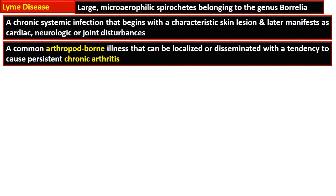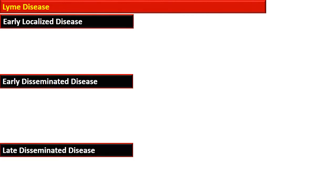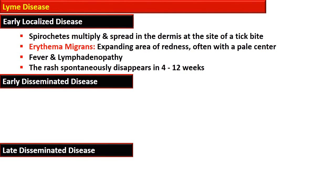Diagnosis is usually dependent on serology but can be confirmed by PCR of the infected area. Lyme disease is a multi-system disease with three stages: early localized, early disseminated, and late disseminated disease. The early localized disease is limited to the area of the tick bite, where spirochetes multiply and spread in the dermis, developing a lesion termed erythema migrans—an expanding area of redness, often with a pale center, accompanied by fever and lymphadenopathy. This rash spontaneously disappears in 4 to 12 weeks.